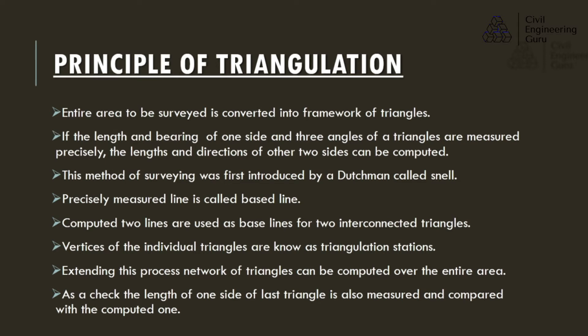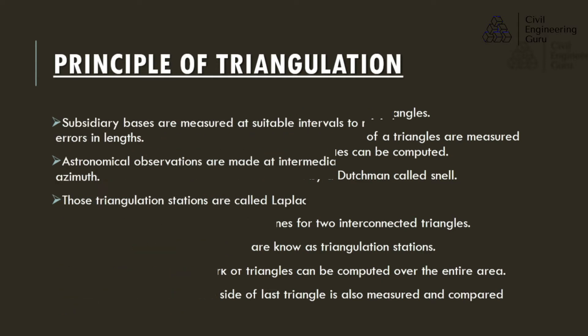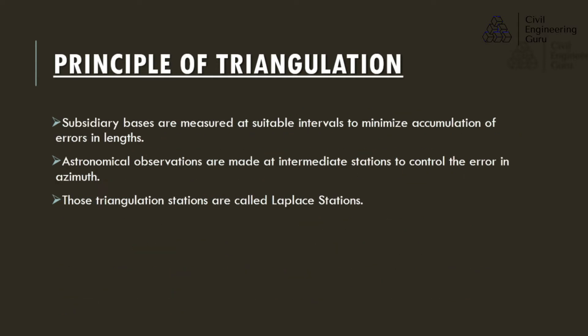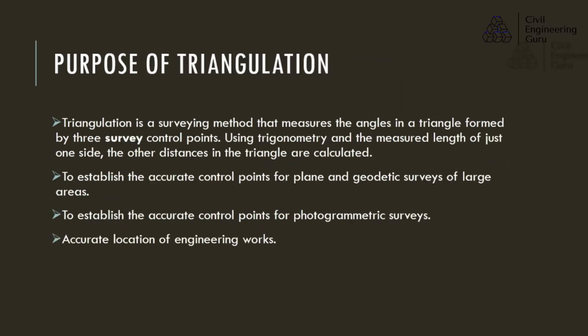Extending this process, a network of triangles can be computed over the entire area. As a check, the length of one side of the last triangle is also measured and compared with the computed one. Subsidiary bases are measured at suitable intervals to minimize accumulation of errors in lengths. Astronomical observations are made at intermediate stations to control the error in azimuth; those triangulation stations are called Laplace stations.